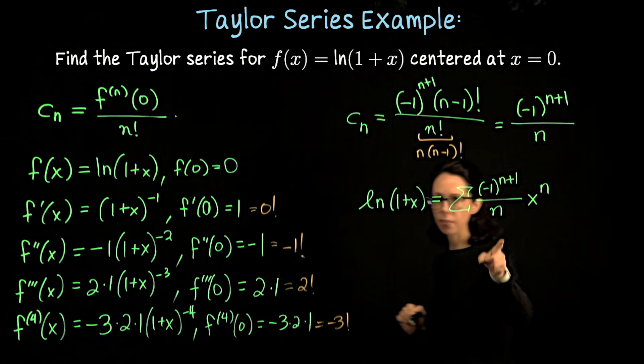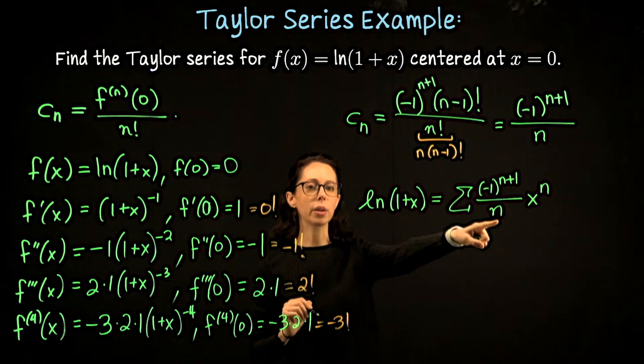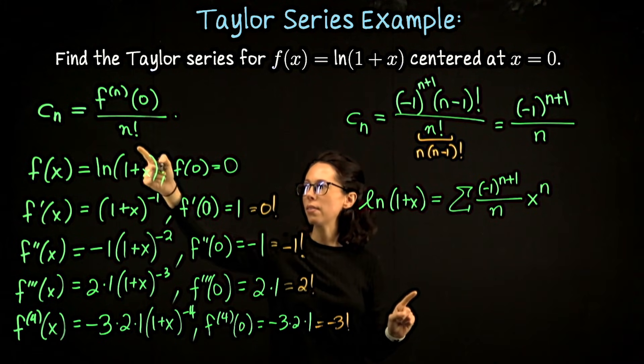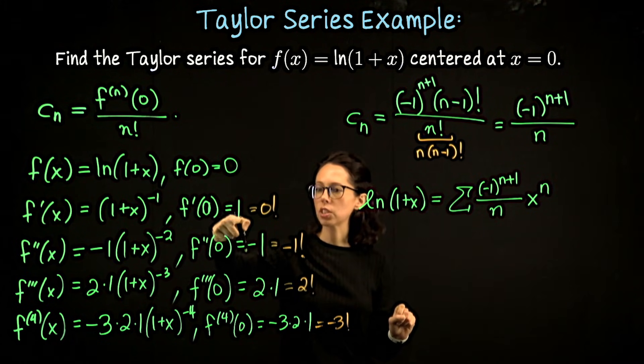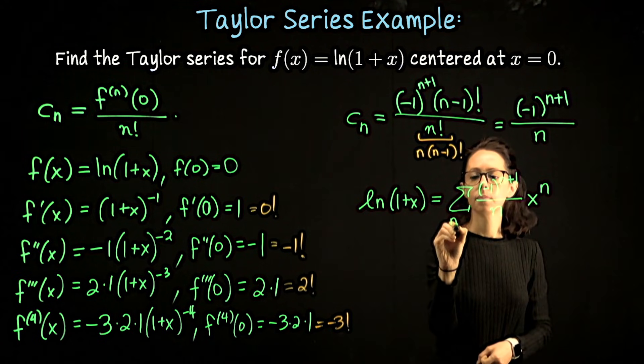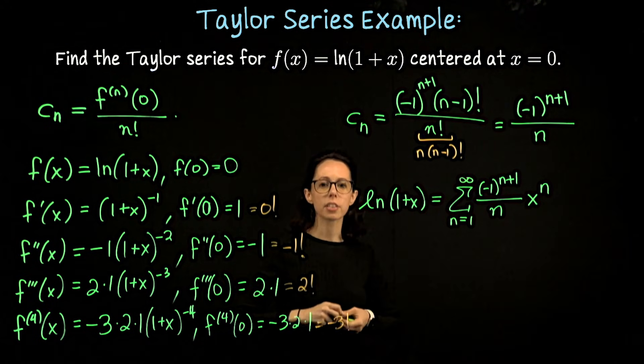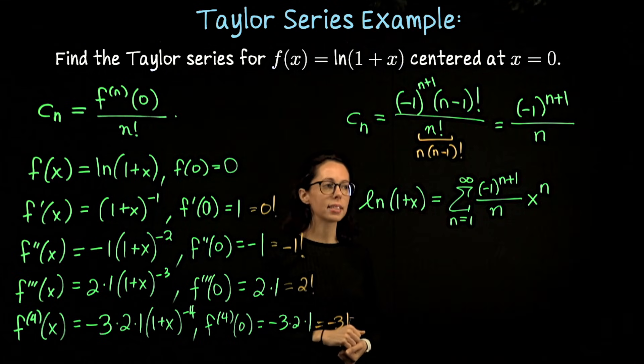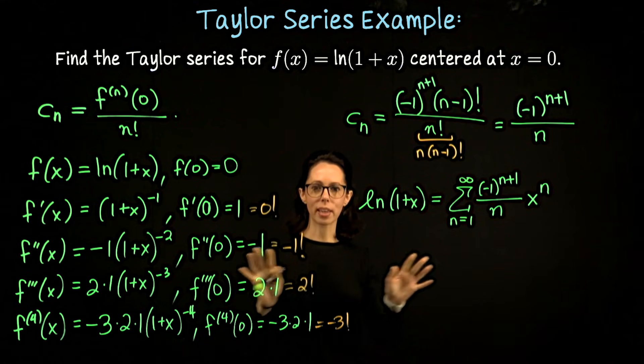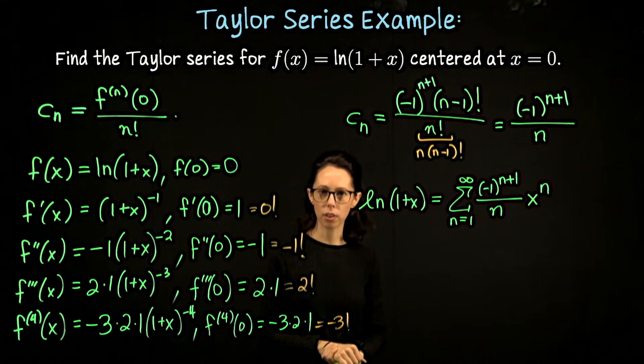You always want to be careful that you don't have a denominator of 0 when you write these kinds of expressions. Were I to plug in n equals 0, we would have a 0 denominator. But notice that we don't have a c sub 0 term. We really start with n equals 1. So here is the Taylor series for natural log of 1 plus x centered at x equals 0. Let me step aside for a second so you can catch up with any of this, and then I will come back and we will do the radius and interval of convergence.